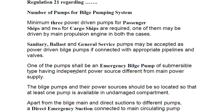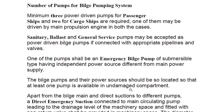One of the pumps shall be an emergency bilge pump of submersible type. We test the emergency bilge suction by inserting a gunny bag below its bell mouth, filling it with water, then just opening and shutting the valve to check. The emergency bilge pump must have an independent power source — different from the main power supply, meaning it should be connected to the emergency switchboard. The bilge pumps and their power sources should be so located that at least one pump is available in an undamaged compartment.